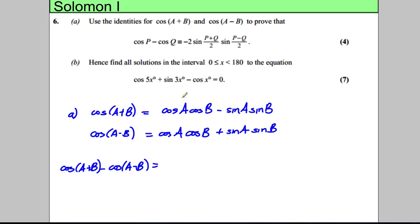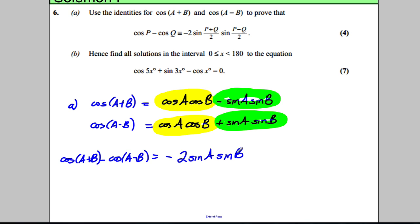Just think about this. This is going to cancel with this, negate each other, whereas I've got a negative of this and I'm going to take off another one, so I'm going to have negative two of that. So I get negative 2 sin A sin B.